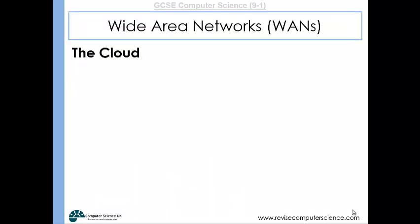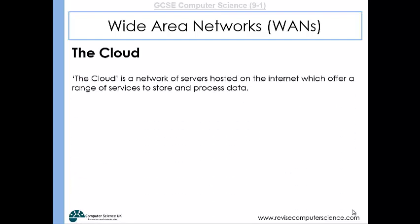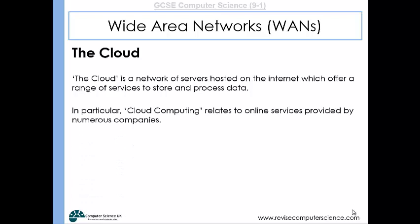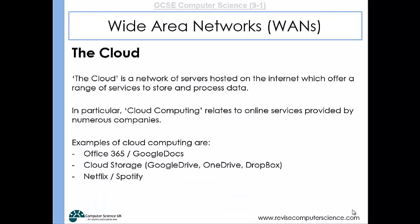We've just seen how some computers on the internet can host websites. There are other services that computers on the internet can provide. The cloud is a network of servers on the internet which offer lots of different services — maybe to store or process data. This often relates to online services provided by companies such as Google, Microsoft, Netflix, and Spotify. Office 365 and Google Docs provide applications such as word processing or spreadsheets. Cloud storage lets you store your data and access it from anywhere as long as you have an internet connection. Netflix and Spotify are streaming services that provide the ability to stream films and music. These are all examples of cloud computing.